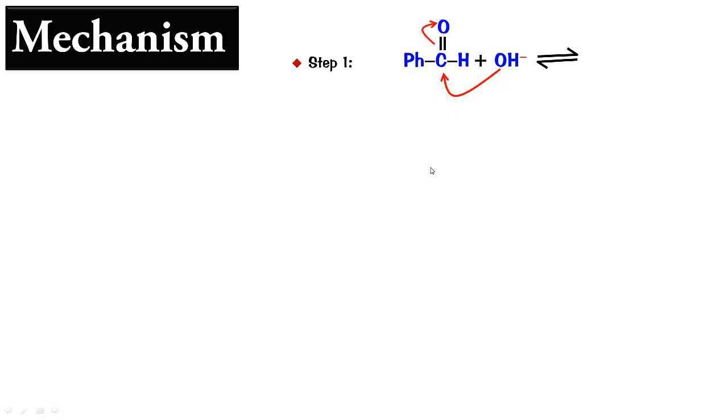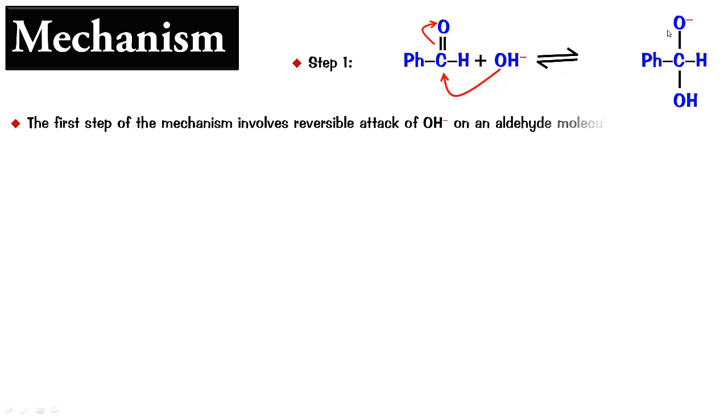And this pi-bond is going to shift to O to make sure the carbon has only tetravalency. This is a reversible process and you end up getting what is known as a hydroxy alkoxide. This is the hydroxy part and this is the alkoxide part. So this is the first step and this is the reversible attack and you get hydroxy alkoxide in this.